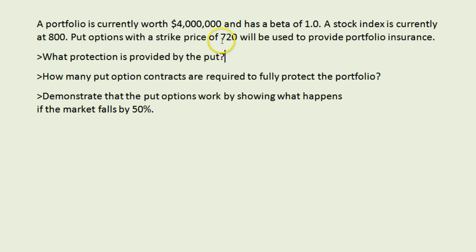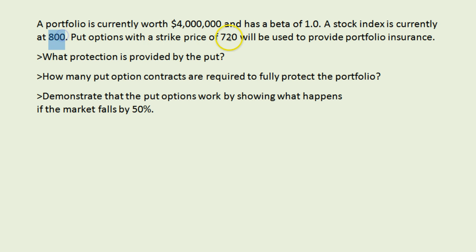So in order for the stock index, currently at 800, to fall below 720 — which is where a put option would start to pay off — the market would have to fall by 10%. 10% of 800 is 80, and subtracting that gives us 720. So if the stock market fell 10% we would expect our index to fall from 800 to 720, and that is where the put would start to pay off if the market dropped by 10% or more.